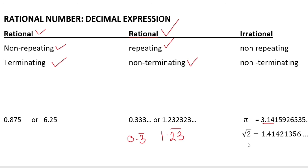The square root of 2 is approximately 1.414. The value of the square root of 2 is 1.41421356. This is an irrational number. Thank you.